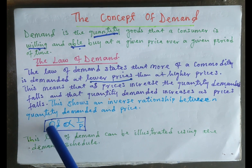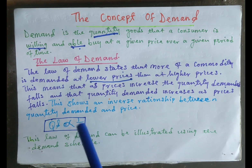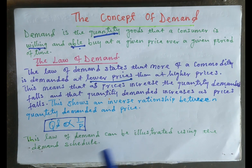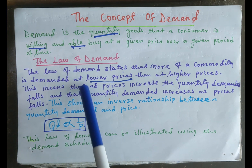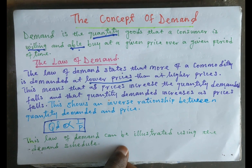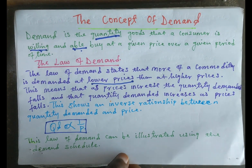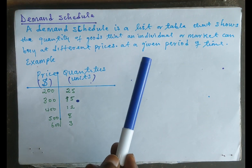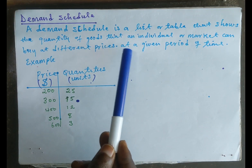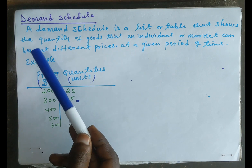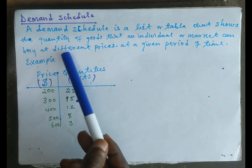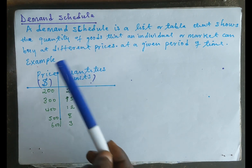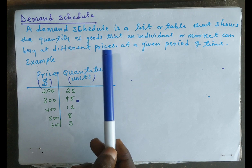This can be mathematically expressed as shown. We can then go forward to use the demand schedule to explain the law of demand so that we can see it practically. The demand schedule is a table that shows the quantity of goods that an individual or market can buy at given prices over a given period of time.